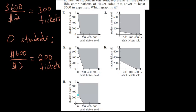And when zero students buy tickets, you can see the X intercept is this value of 200, which means 200 adults have to buy tickets. So this choice, letter H, would be the correct graph and our final answer.